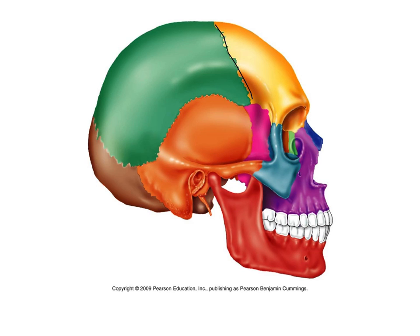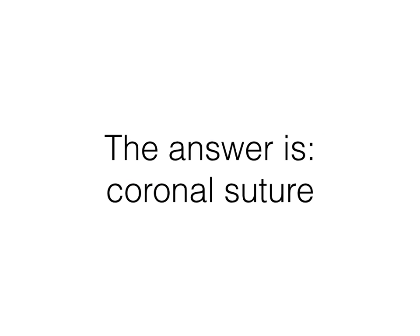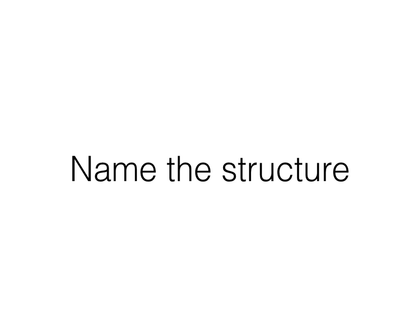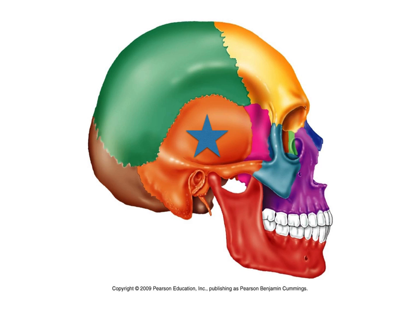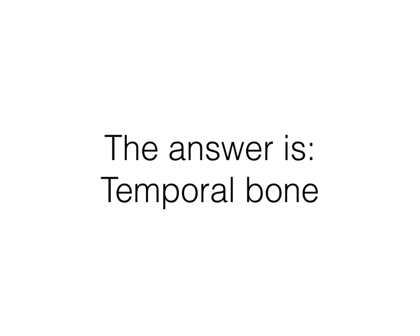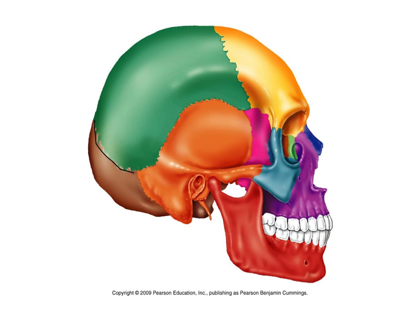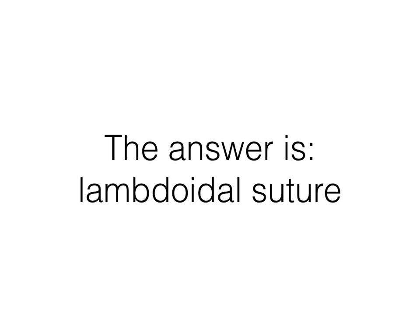What is the name of that line there between the green and yellow area? That's the coronal suture. What's the name of the bone with the star on it? That's the parietal bone. What's the name of the bone with the star on it this time? That is the temporal bone. What's the name of the line between the green and brown area there? That's the lambdoidal suture.